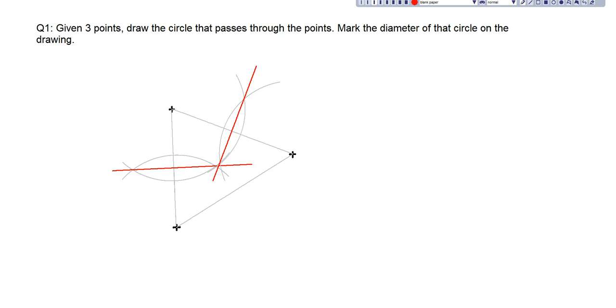Once we have both perpendicular bisectors, we have to take our compass and place it at the intersection of these bisectors and draw a circle that will pass through any one of the three given points.